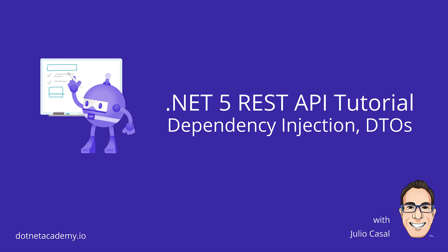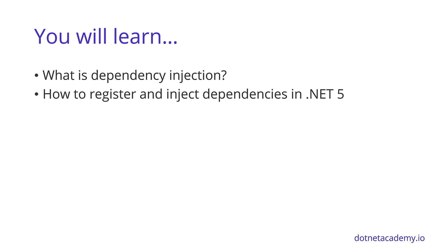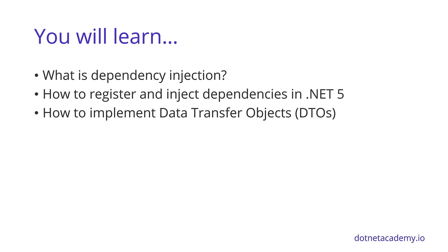In this third part of the .NET 5 REST API tutorial, we learn about the dependency injection technique and how to leverage it to properly inject a repository instance to the items controller. We also introduce the concept of data transfer objects and how to use them to establish a clear contract with our API consumers. Today you will learn what is dependency injection, how to register and inject dependencies in .NET 5, how to implement data transfer objects, also known as DTOs, and how to map entities to DTOs.